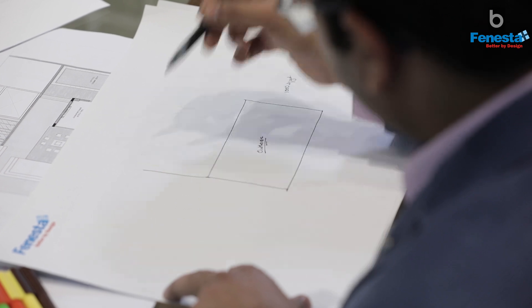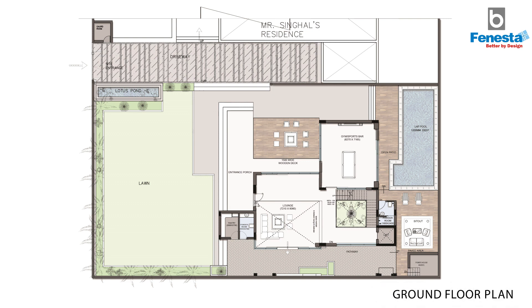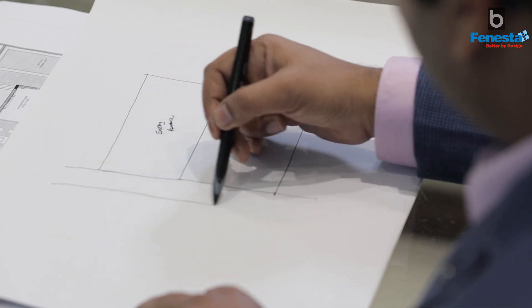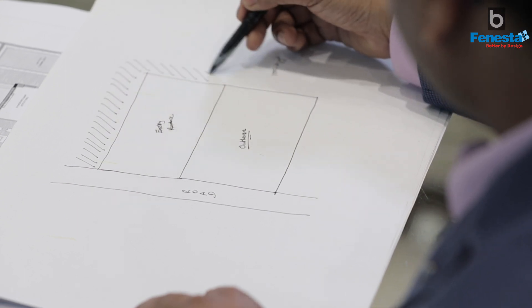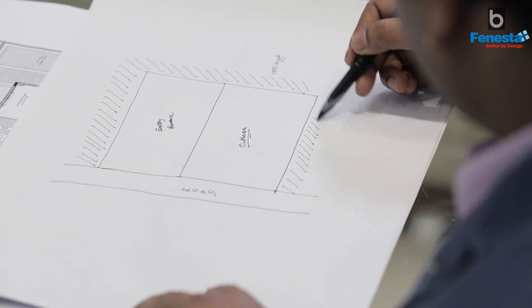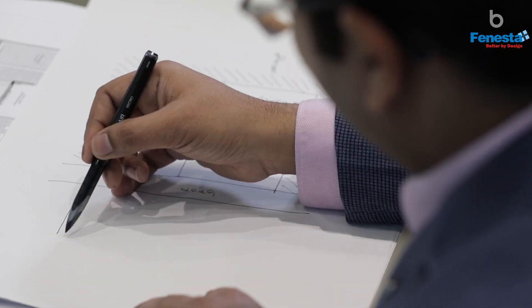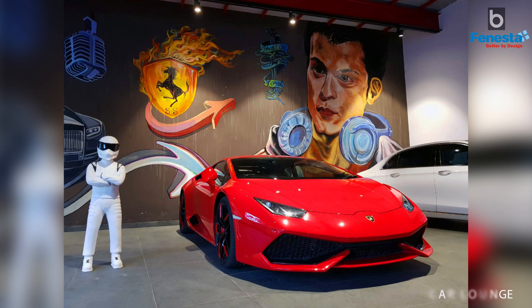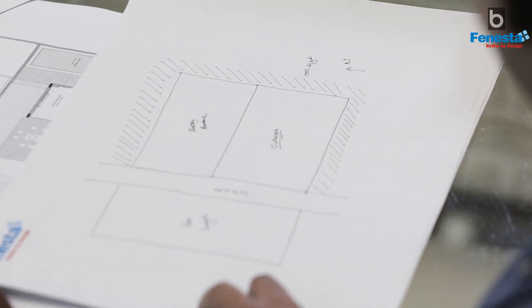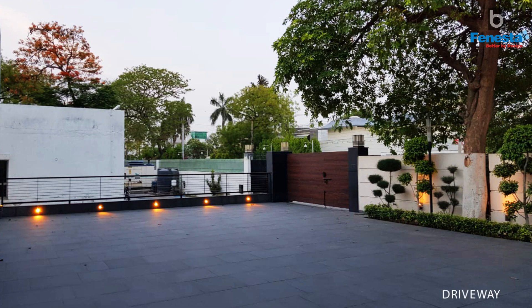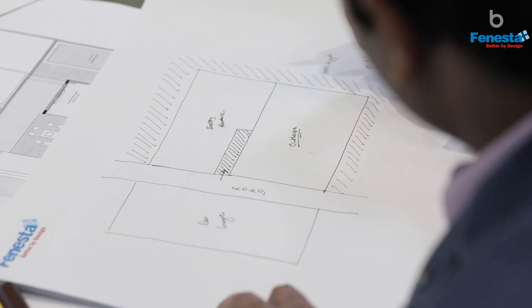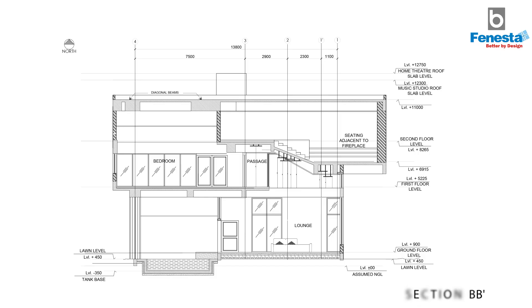The client had their existing house just adjacent to this plot. In the front there was a road, and on adjacent sides were neighbouring plots. Just across the road, the client wanted to develop a car lounge. The north is in this direction and there is a common driveway connecting both plots. The entrance to the existing house and the entrance to this particular project are shown here.